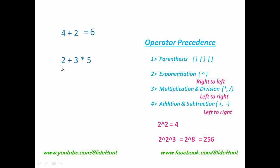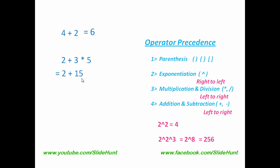According to operator precedence, multiplication has higher precedence than addition. So we perform this operation first: 3 multiplication 5, which equals 15. Then we perform 2 plus 15, which equals 17.